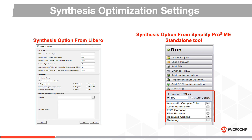Resource sharing is area optimized logic sharing. Simplify will share hardware resources like adders, multipliers and counters whenever possible to minimize area. Retiming provides performance-driven register balancing. It automatically moves registers across combinatorial logic to improve timing while maintaining the original intended behavior of the design.